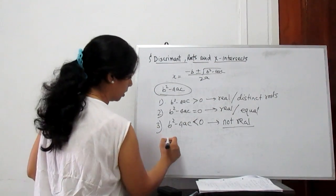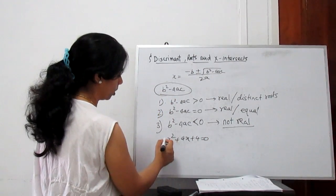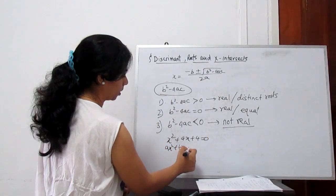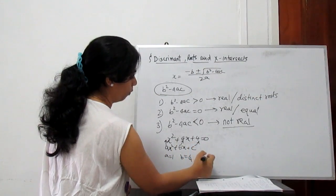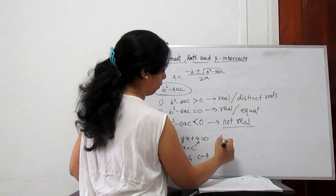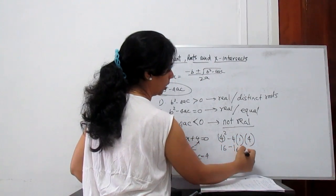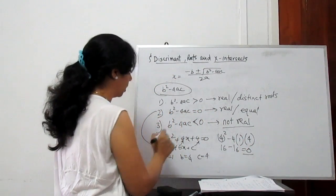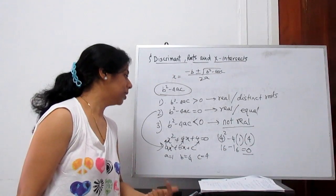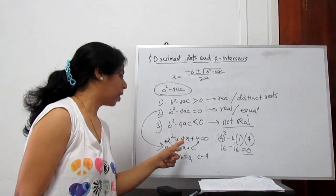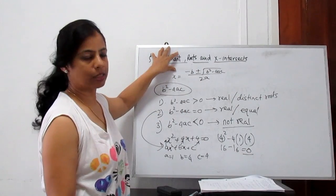For example, consider x² + 4x + 4 = 0. Find B² − 4AC. Comparing with ax² + bx + c, A = 1, B = 4, C = 4. So B² − 4AC = 4² − 4(1)(4) = 16 − 16 = 0. It satisfies the second condition — roots are real and two equal roots. It means it is a whole square: (x + 2)² and roots are −2, −2.